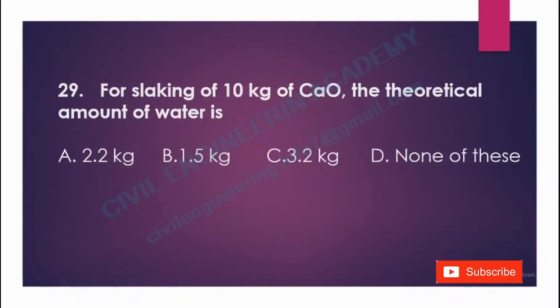For slaking of 10 kg of calcium oxide, the theoretical amount of water required is: A) 2.2 kg, B) 1.5 kg, C) 3.2 kg, D) none of these. The answer is 3.2 kg.